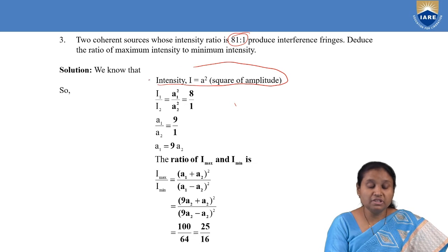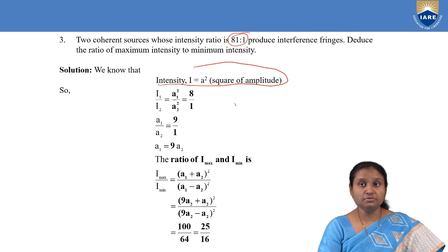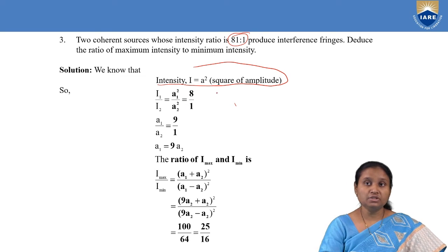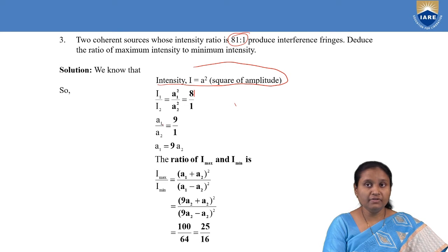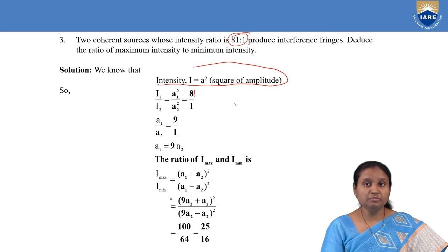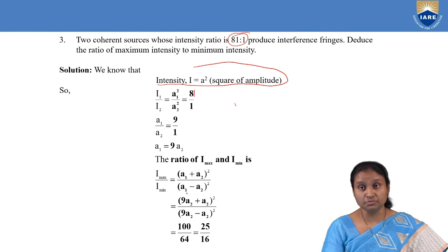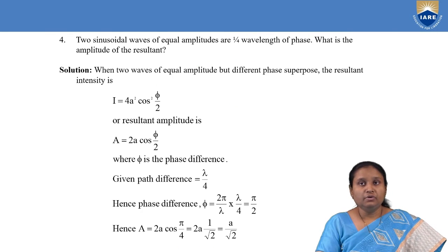We make use of the concept that intensity equals square of amplitude. The ratio I1 by I2 equals A1 squared by A2 squared, which equals 81 to 1. Taking the square root, A1 by A2 equals 9 by 1, so A1 equals 9 times A2. Maximum intensity is (A1 + A2) whole square and minimum intensity is (A1 − A2) whole square. Substituting A1 = 9A2 and simplifying, the ratio of maximum to minimum intensity comes out to be 25 by 16.